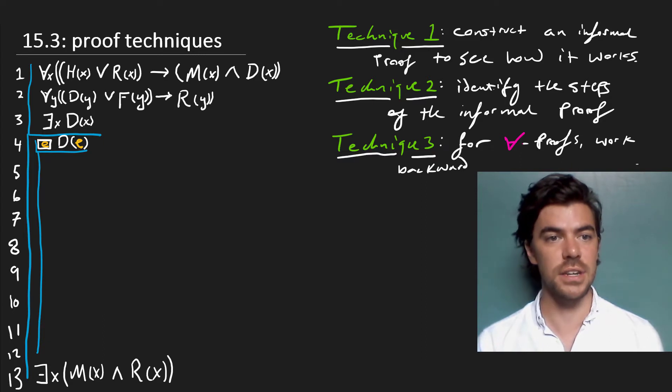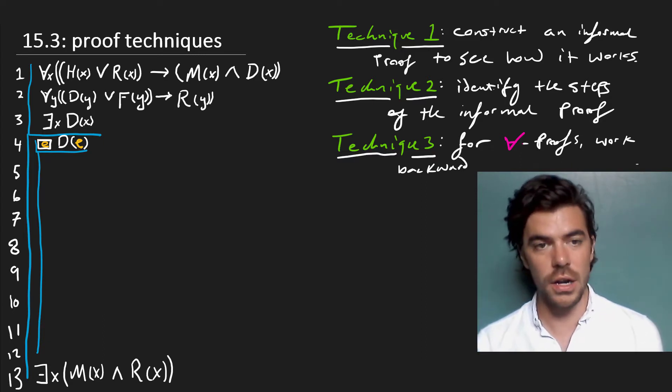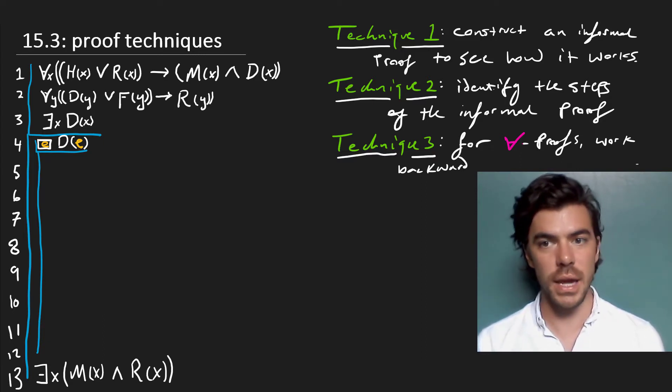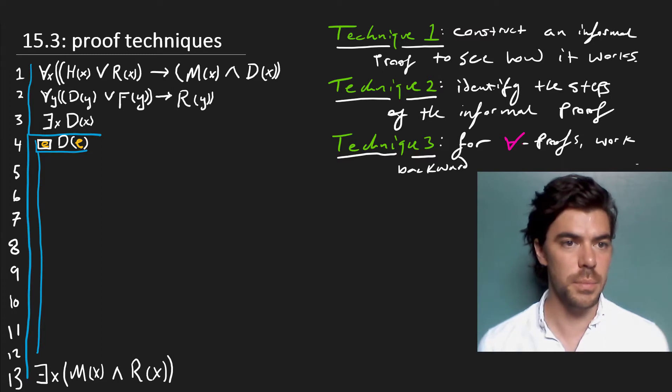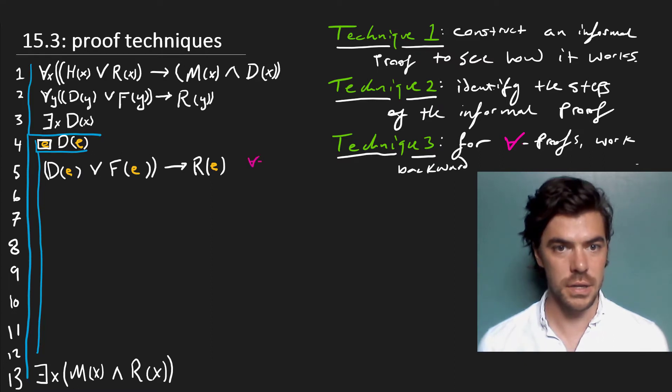If a universal statement like 2 on our line here, which says that everything, if it's a D or an F, is an R, will apply to every object in the domain. And we've already stipulated that constants have to pick out an object in the domain. So on these grounds, we can perform a universal elimination on 2, which gets us that if E is a D or an F, then it's an R, universal elimination.